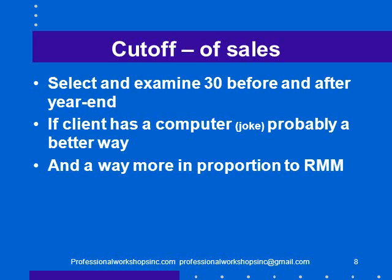Another example: cut-off of sales, selecting 30 invoices before and after year end. Again, if the client has a computer — again, a joke — there is probably a computerized and better way for us to audit that the client finds out whether or not they did cut-off right, and a way more in proportion to our assessment of risk of material misstatement. If we knew the client was in a great big mess, 30 before and 30 after might not be sufficient. But for a client where we think controls are good, where we've done a systems walkthrough and that's worked, we're probably wasting our time doing this. There's probably a better way — a way of challenging management's assertion that they've done the cut-off correctly.